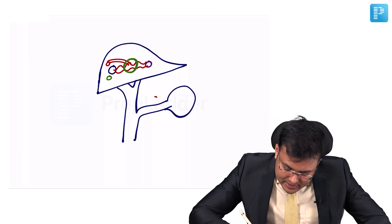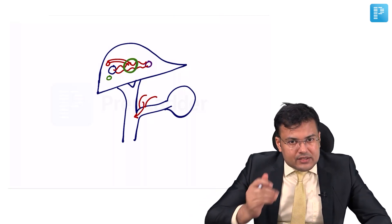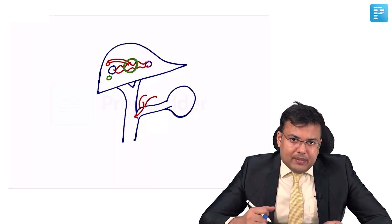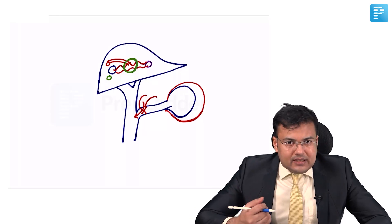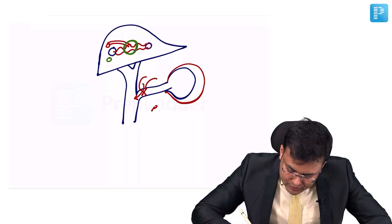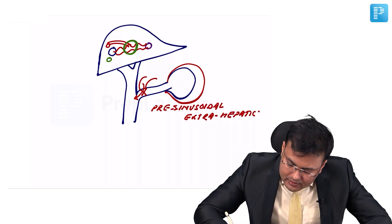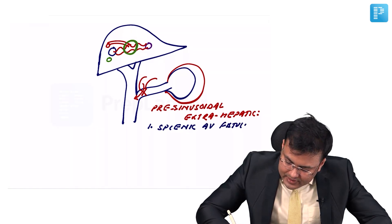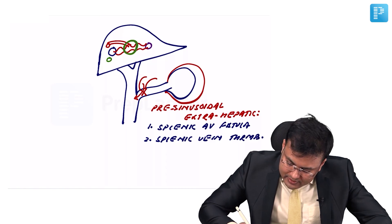Splenic AV fistula — splenic arteriovenous fistula — causes increased flow leading to portal hypertension and is pre-sinusoidal and extrahepatic. Similarly, splenic vein thrombosis and splenomegaly are also pre-sinusoidal extrahepatic causes.